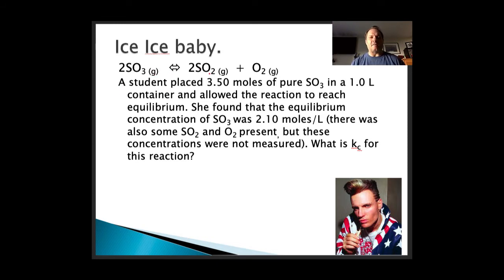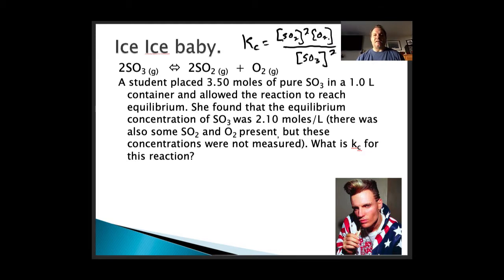We have two sulfur trioxides forming two sulfur dioxides and one oxygen. A student placed 3.5 moles of pure SO3 in a one-liter container and allowed the reaction to reach equilibrium. She found the equilibrium concentration of SO3 was 2.10 moles per liter. SO2 and O2 were present but not measured. We need to find Kc. The Kc expression equals [SO2]² × [O2] divided by [SO3]², but we don't have all the data yet.